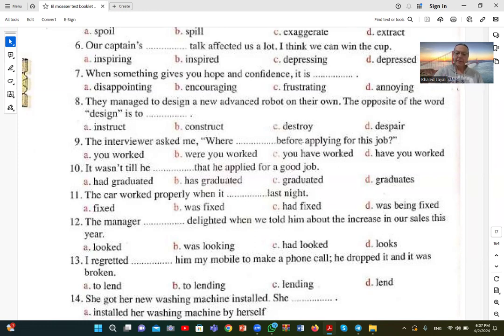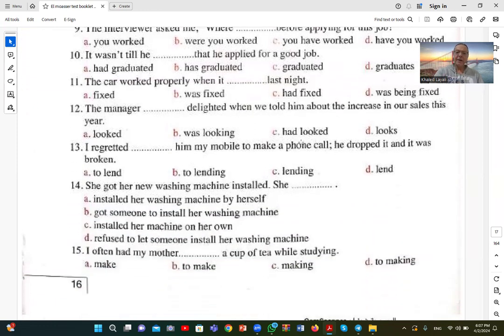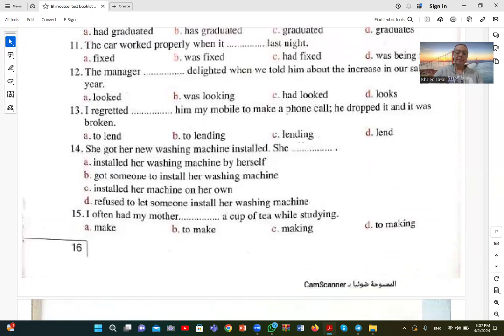Number fourteen: She got her new washing machine installed. This means she got someone to install her washing machine. 'Got her washing machine installed' means someone else installed the washing machine, not she herself. It means someone else installed it for her. So B is the correct answer.